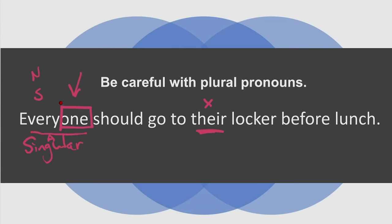This should be changed to 'students.' Students should go to their lockers — because there's more than one student, this is noun-noun agreement. There are multiple students, therefore there are multiple lockers. Not all the students are going to one locker. So be on the lookout for 'everyone' used with 'their' — they don't agree. It's not pronoun-antecedent agreement.